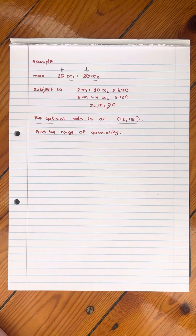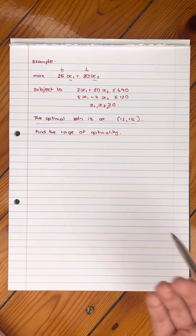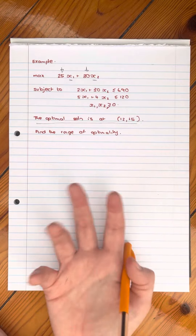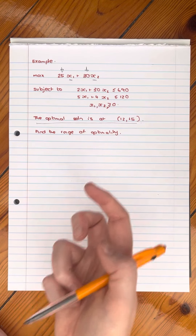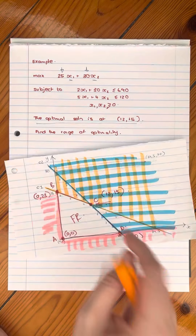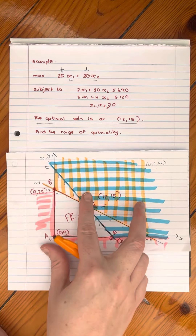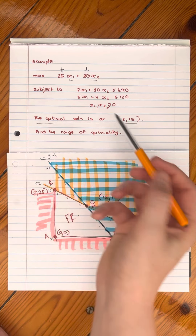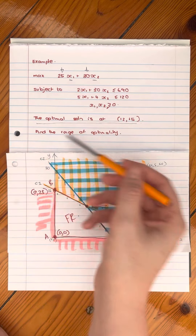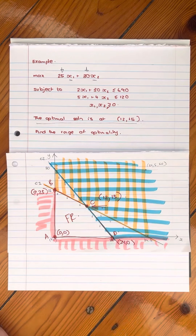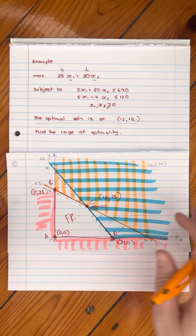In other words, we don't have to restart our problem and resolve it. We're bringing back the solution to this. They already told us the solution — it's at x=12 and y=15 — and we could work out the range of optimality just from that, but I want to explain a little bit further.